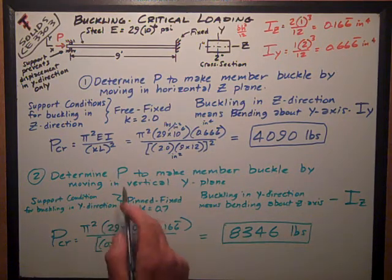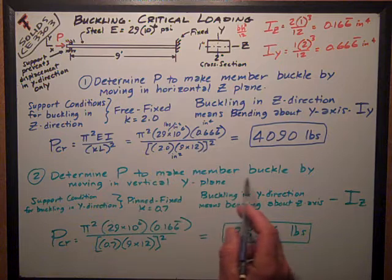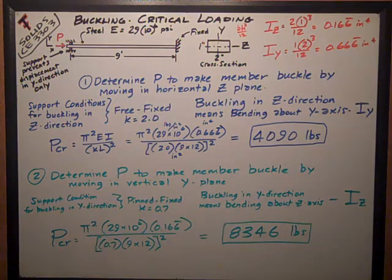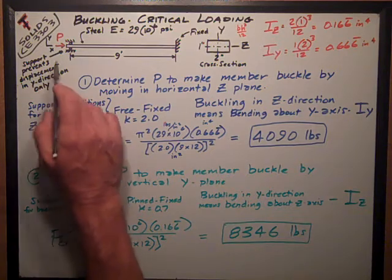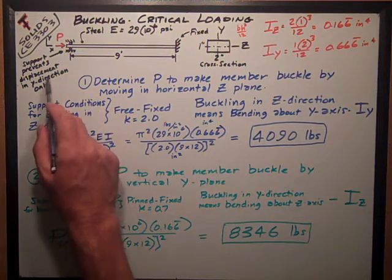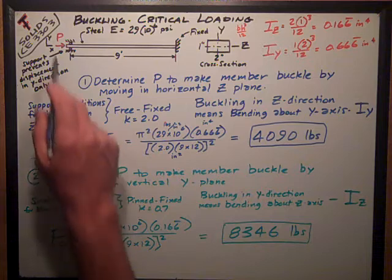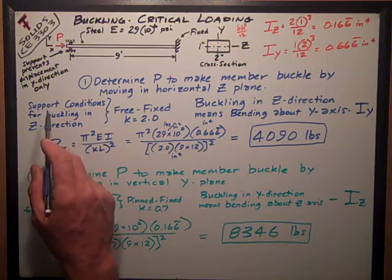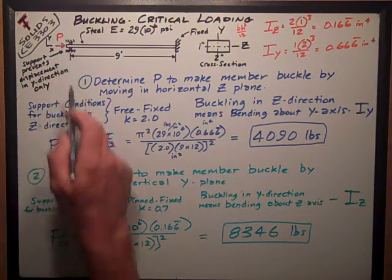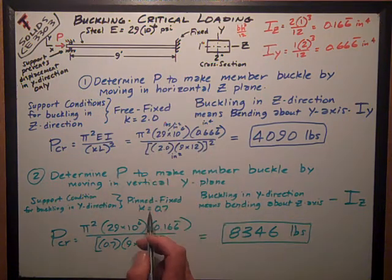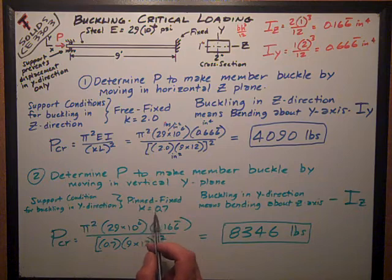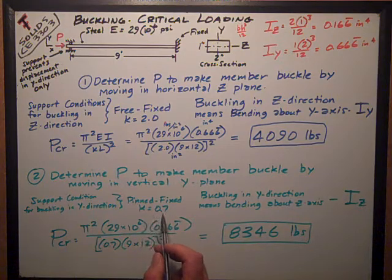Similarly, part two, determine the P axial force to make the member buckle by moving in the vertical Y plane. Look at the support conditions first. We've been told that support prevents displacement in the Y direction only. So it can't move, but it can rotate. So that's a pin. It's still fixed at that end, so it's pinned-fixed. Effective length factor is 0.7.